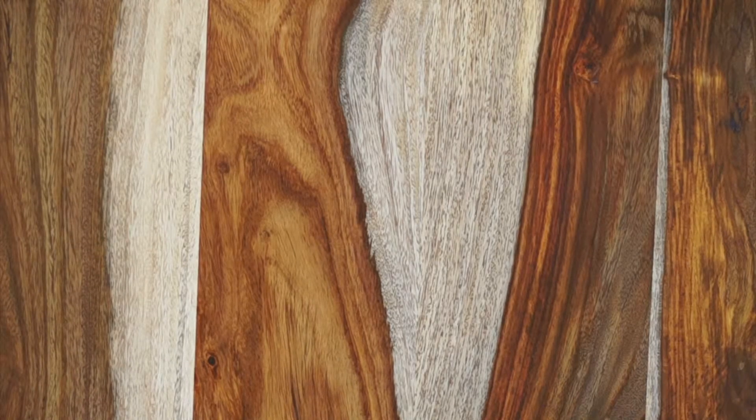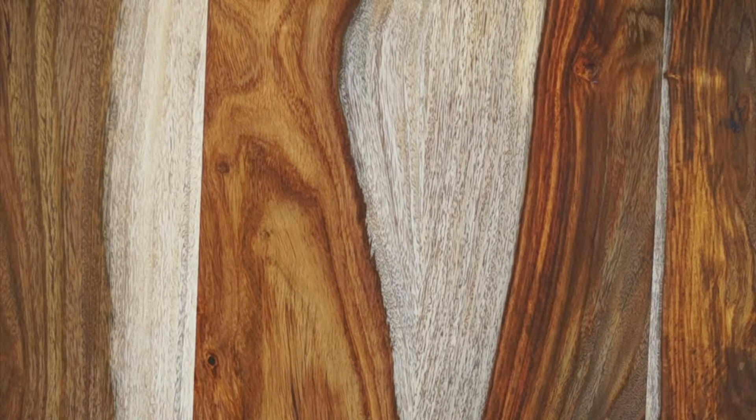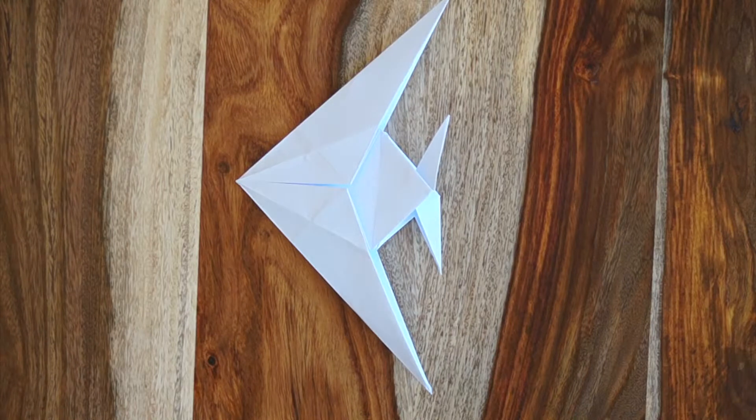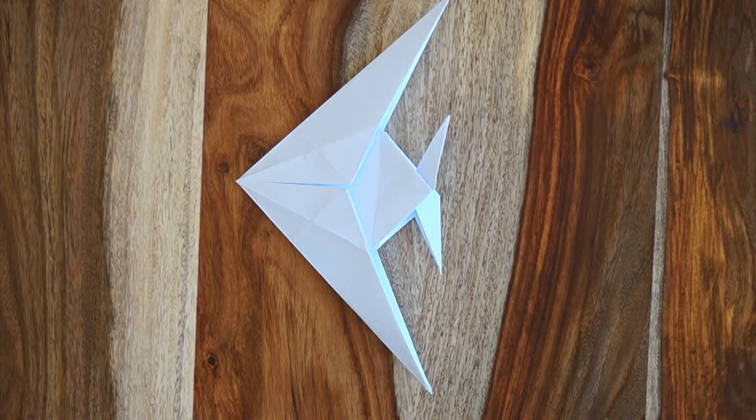Hello everyone and welcome to this video on how to add some color to our origami. Let's take a look at this fish that I folded out of a piece of white copy paper or printer paper.